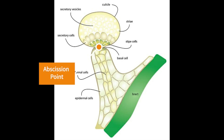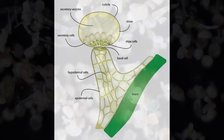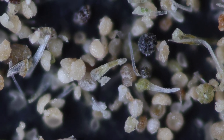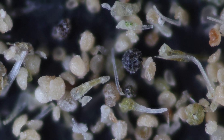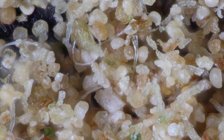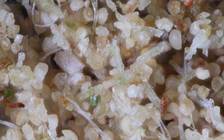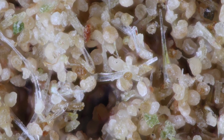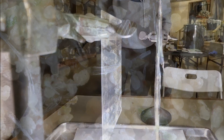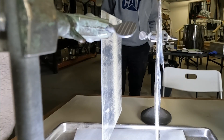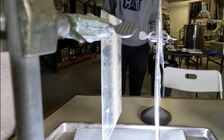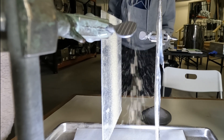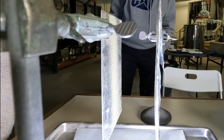Ideally, heads detach from stalks during extraction, but sometimes stalks break off the bract while still attached to the head, due to factors such as extraction technique, equipment, plant maturity, and environmental conditions. Static electricity can effectively separate heads from stalks, but only if stalks are not physically attached to the head.